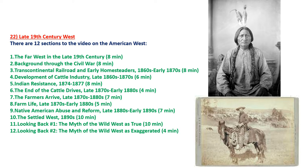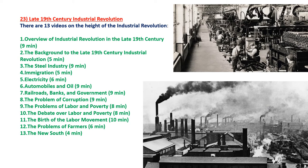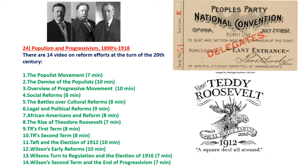There are 12 videos on the late 19th century American West, including cowboys, the last Indian fights, and ultimately the farmers. There are 13 videos on the late 19th century Industrial Revolution — which in America was the height of the Industrial Revolution — discussing not only the big industries dominating the economy, but also some of the problems that emerged.